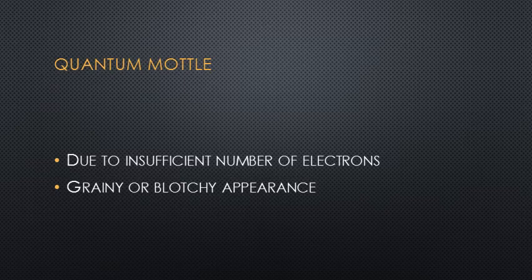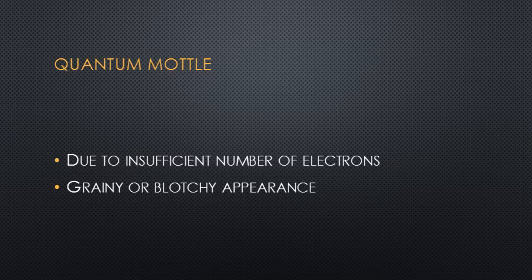Quantum mottle is probably the thing we pay the most attention to in fluoroscopy, for the same reasons as in static radiography — low techniques. In static imaging, MA and time are the technical factors needed to overcome quantum mottle. But in fluoroscopy it's different, because we really only choose the MA. The time is actually dependent on how quickly our eye can accumulate light photons from the displayed image — it takes the eye about 0.2 seconds. With lower MAs, the time becomes increased to avoid mottle. Quantum mottle can also come from the video systems in fluoroscopy, as they operate with the minimum number of photons possible.